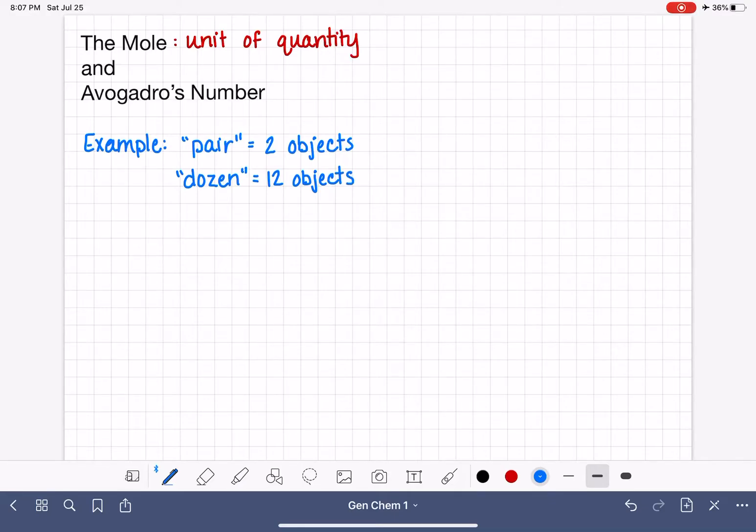So both of these are examples of units of quantity, where the word pair is used to represent two things, and the word dozen means that we have 12 things. And along those lines, mole is just the same idea. In fact, there really isn't any difference between the concept of the pair, the dozen, or the mole. They all really represent the same thing.